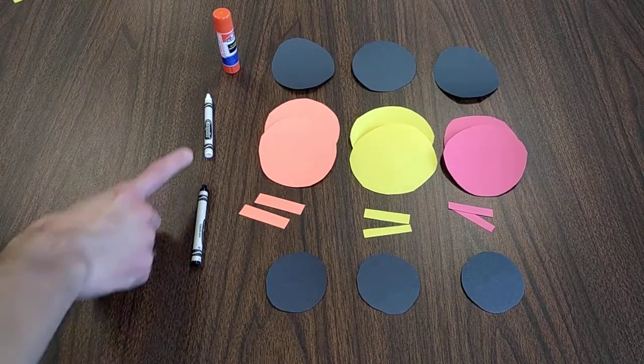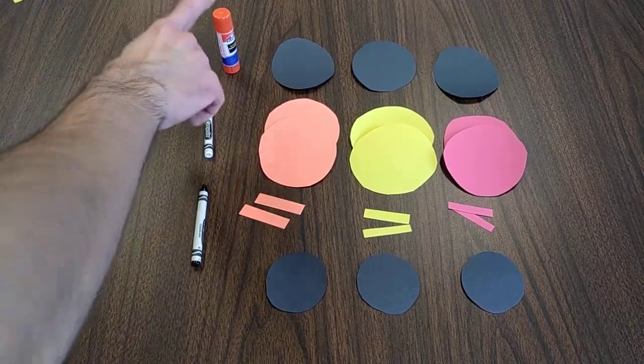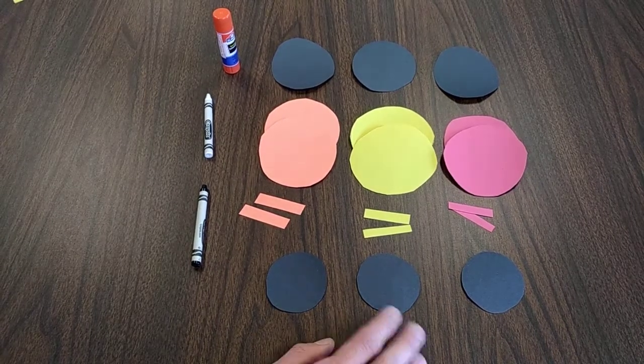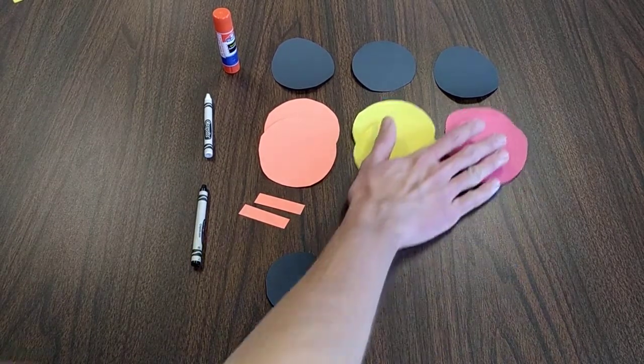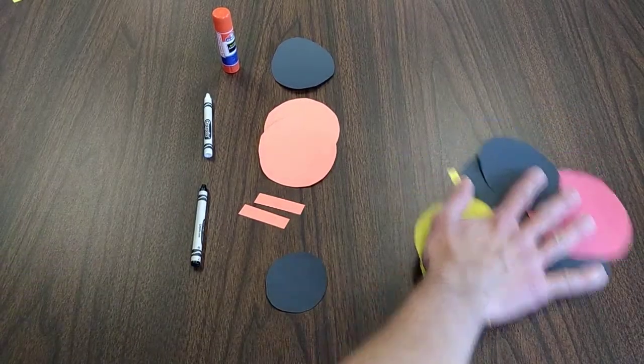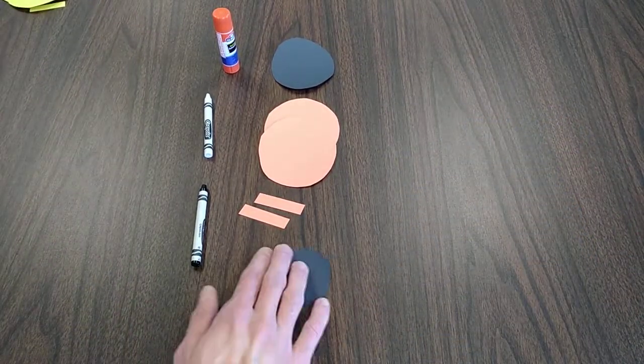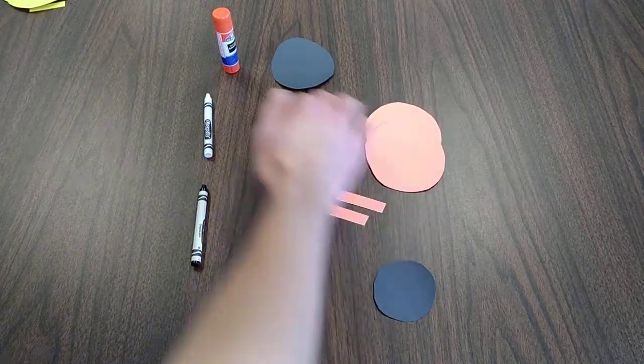Also, you'll need a black crayon, a white crayon, and glue. So, all three can be assembled the same way, so I'm just going to show you how to do the orange one. Put that to the side and get our orange supplies.